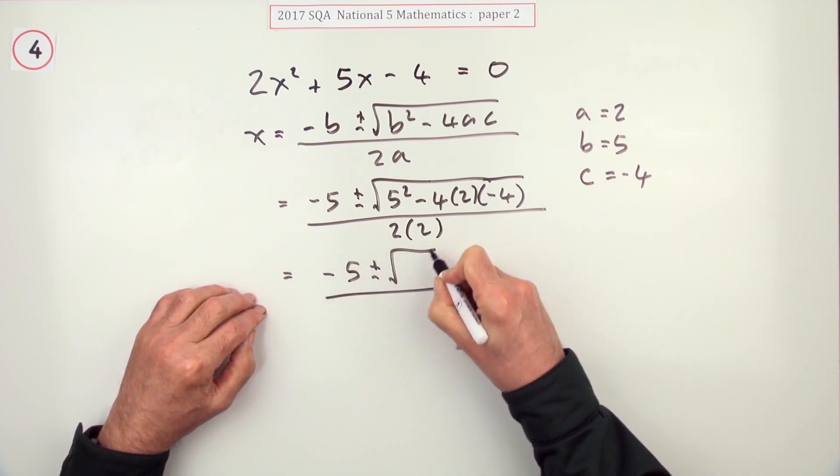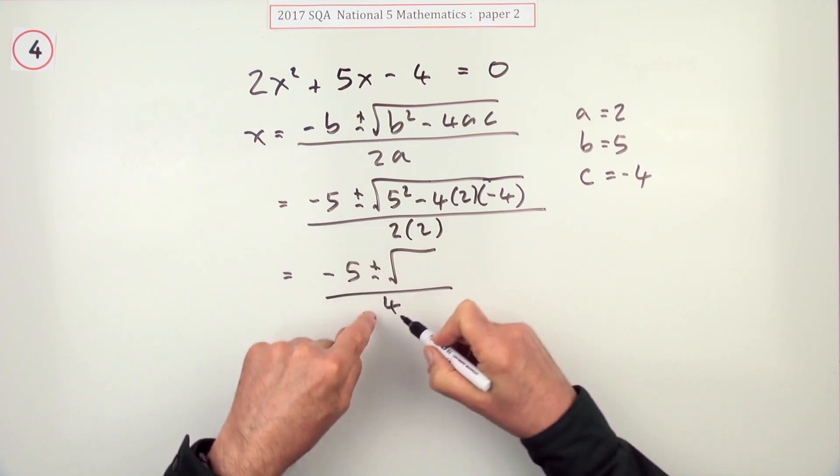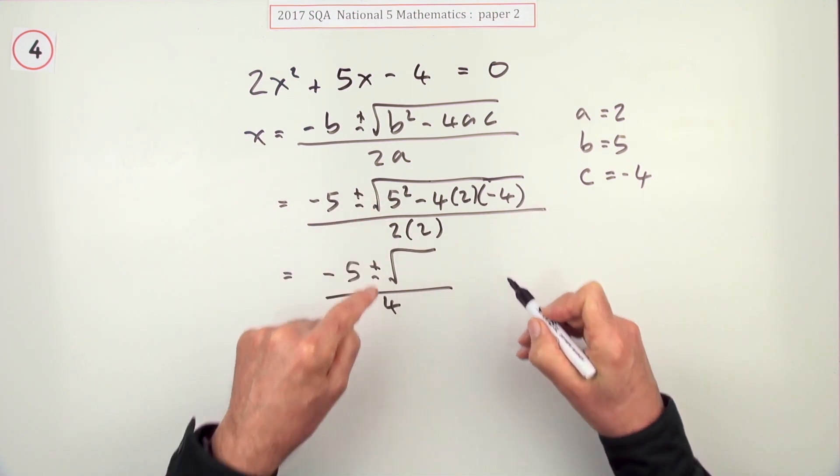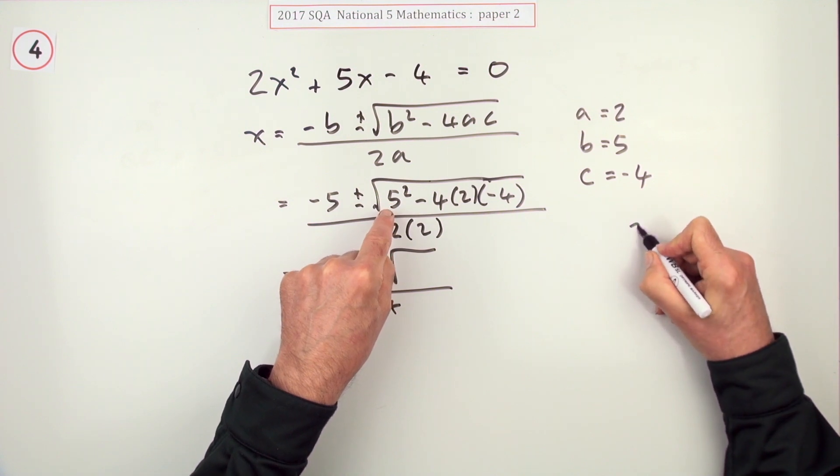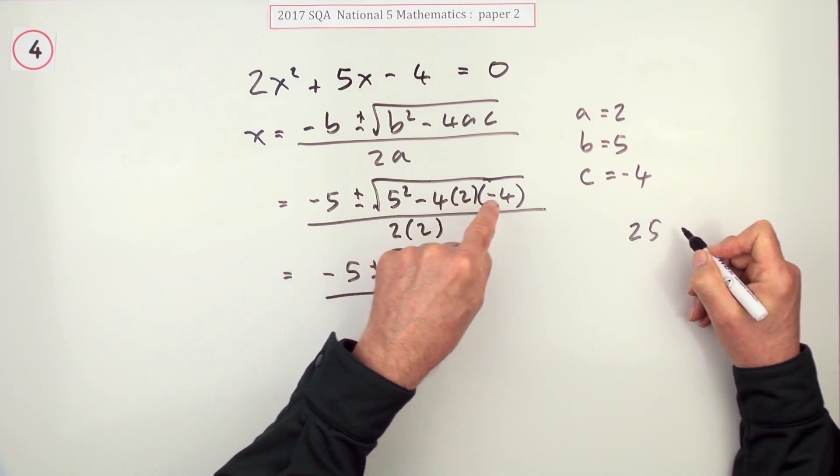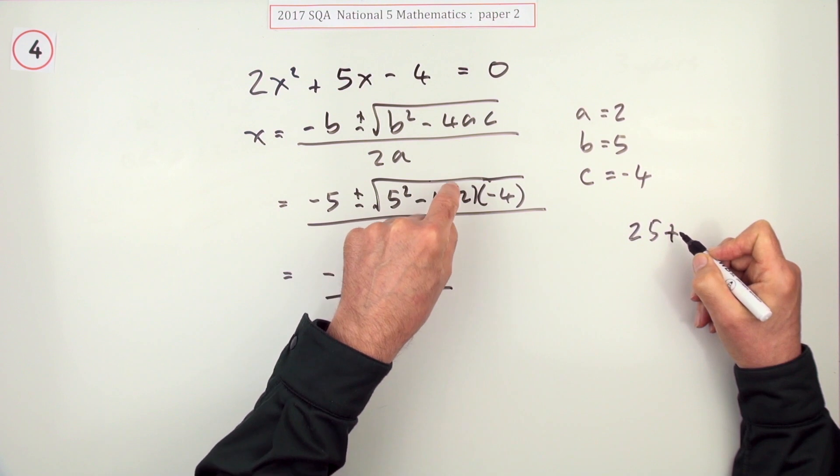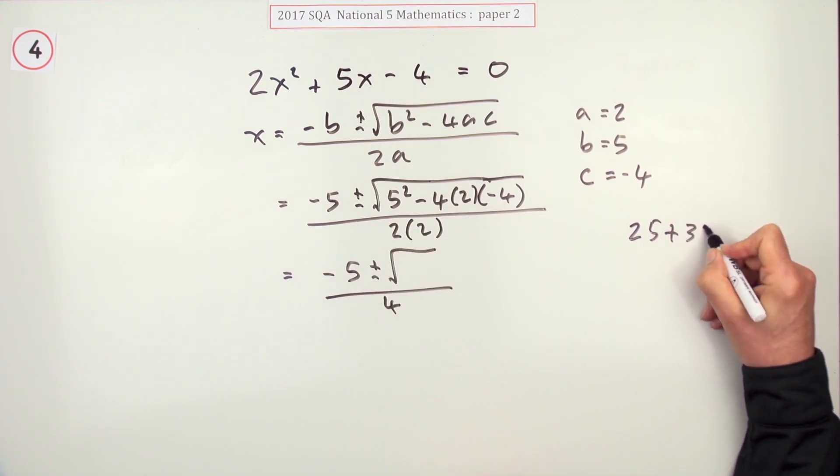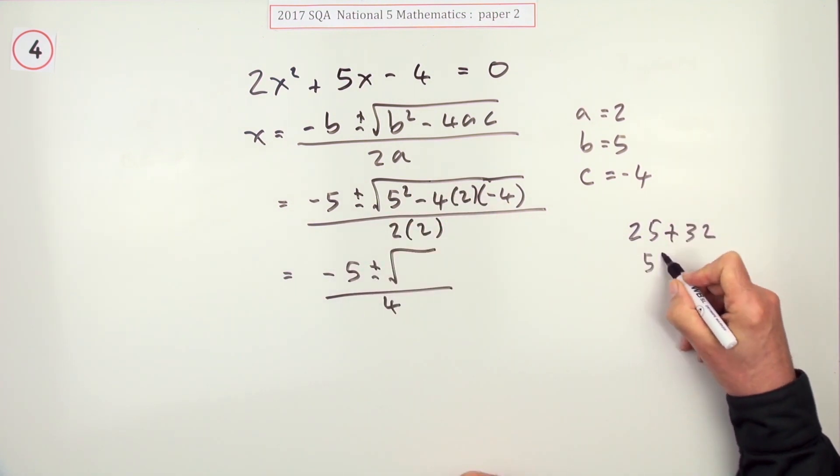I'd rather just write the thing I'm going to use in my calculator. Two twos are four. I'll do this aside: 5 squared is 25, take away a negative is plus. Four twos are eight, and eight fours are 32, so that adds up to 57.